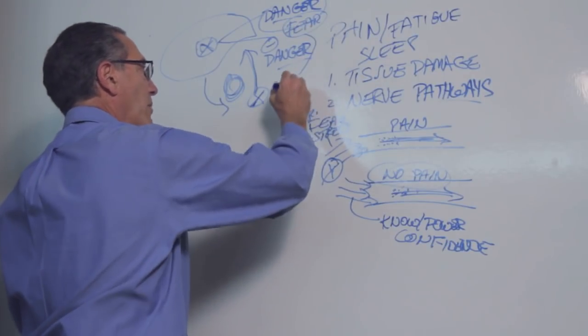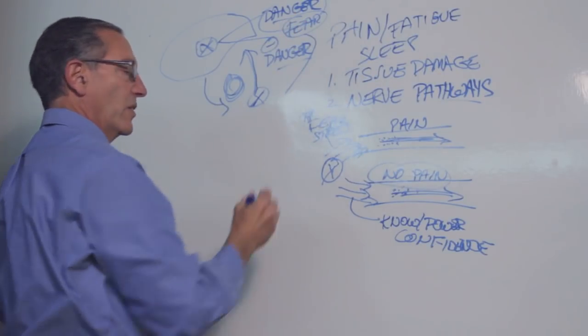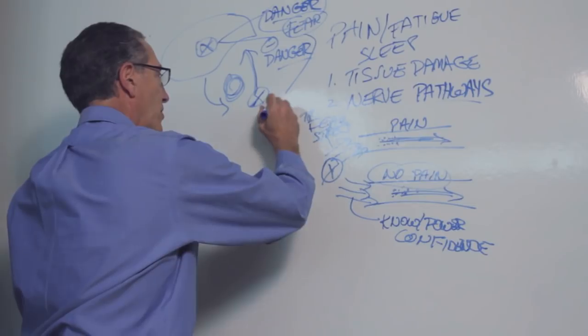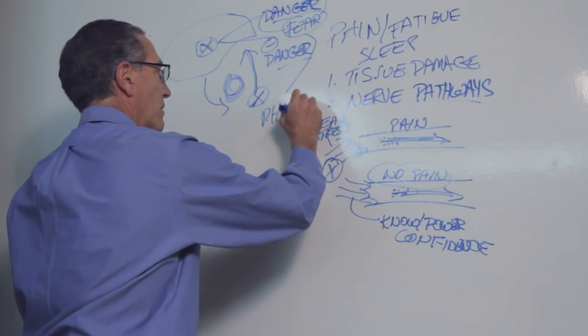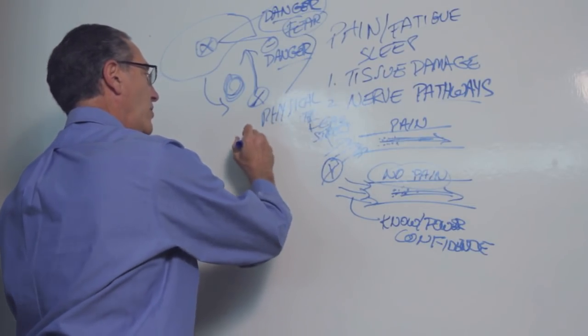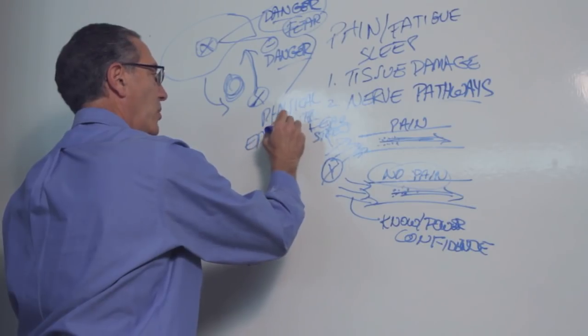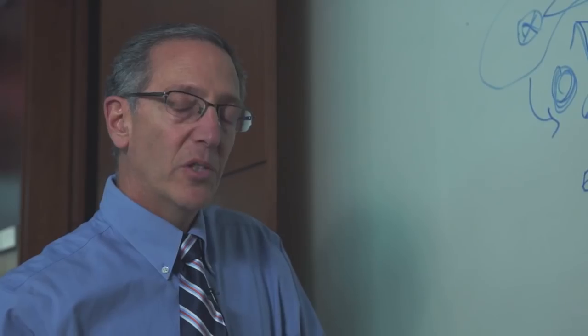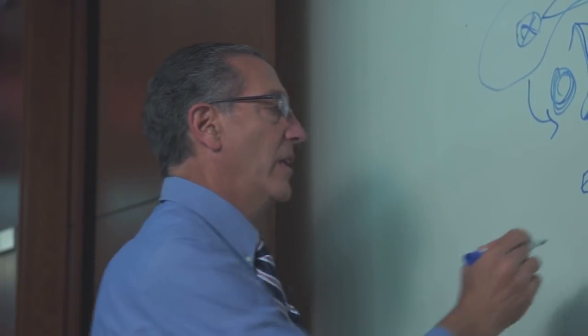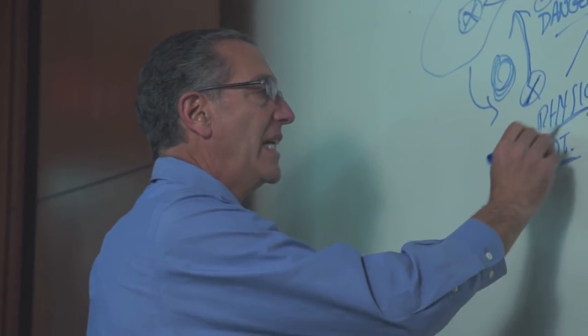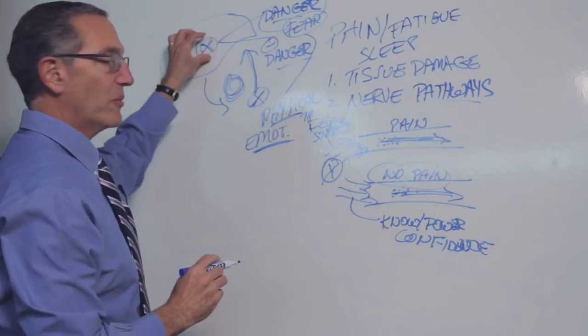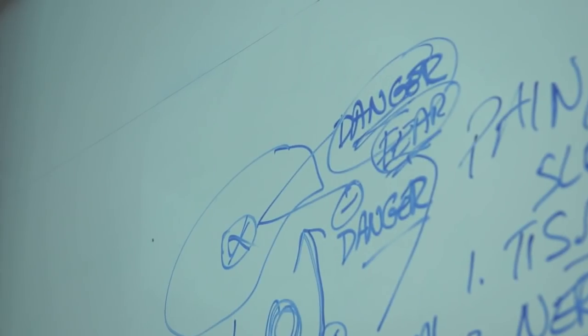The important thing to remember is that this danger signal is triggered by physical injuries. But it turns out it's also triggered by emotional injuries or emotional events. Research has shown that emotional trauma triggers the exact same danger pathways that create pain in the brain.